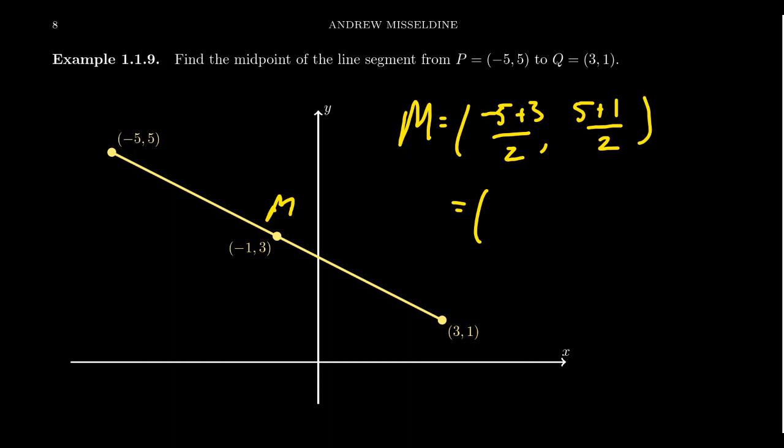In which case, then simplify these fractions. Negative 5 plus 3 is negative 2 over 2. You get 5 plus 1, which is 6 over 2. And then lastly, if you simplify these fractions, you're going to get negative 1 comma 3, which we then see is the midpoint of the line segment.